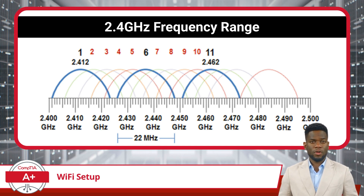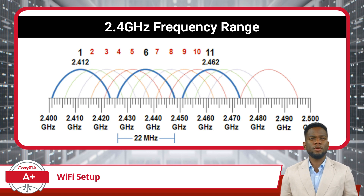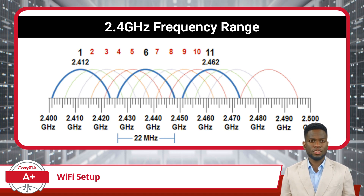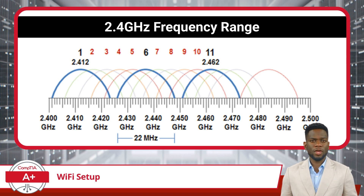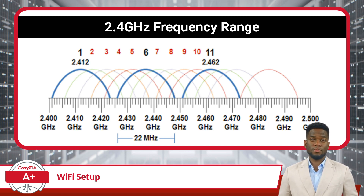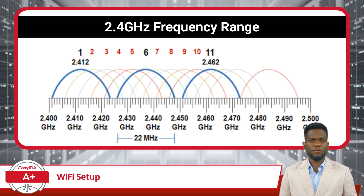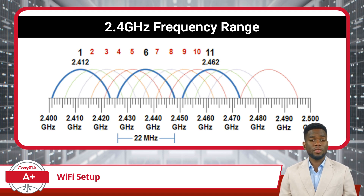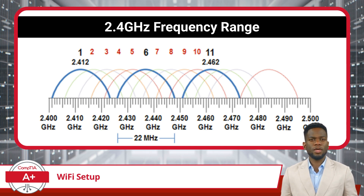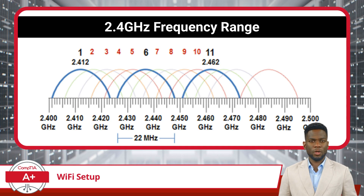The reason for this non-overlapping pattern is due to the frequency ranges assigned to each channel. Channels 1, 6, and 11 have enough separation between their frequency ranges to minimize interference, even when multiple networks are operating nearby. By strategically selecting these non-overlapping channels, network administrators can optimize the performance and reliability of their Wi-Fi networks, especially in areas with high wireless activity. Avoiding overlapping channels is crucial for minimizing interference and maximizing network performance. When adjacent channels overlap, they can cause signal degradation and decreased data throughput, leading to slower and less reliable connections. Therefore, it's recommended to configure wireless access points to operate on non-overlapping channels such as 1, 6, and 11 whenever possible.